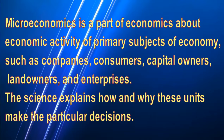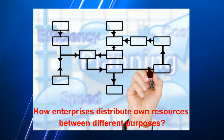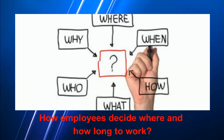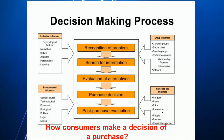The science explains how and why these units make particular decisions. For example, how enterprises distribute owned resources between different purposes, how employees decide where and how long to work, and how consumers make a decision of purchase.